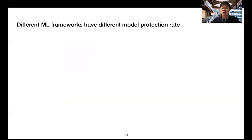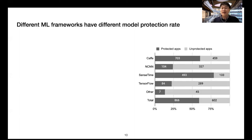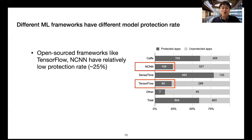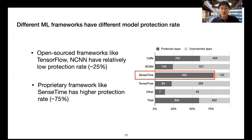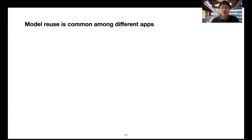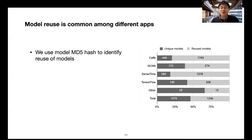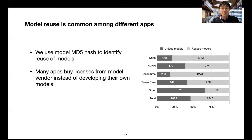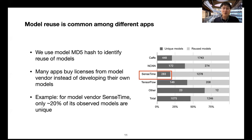Different machine learning frameworks also have different model protection rates. For open-source frameworks like TensorFlow and NCNN, they have relatively low protection rates, around 25%. For proprietary frameworks like Sensetime, the protection rate is higher — understandably, because it licenses its models to mobile developers on a license basis, giving it strong motivation to protect its models. We also find model reuse is common: using model MD5 hash to identify reuse, many apps license models from vendors. For Sensetime, only 20% of its observed models are unique.